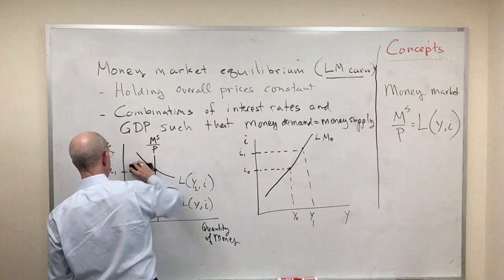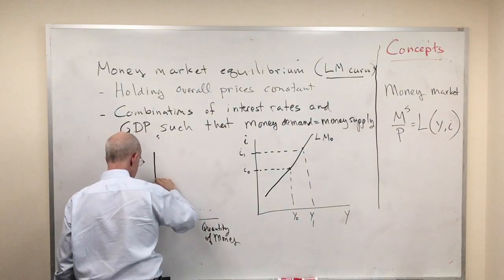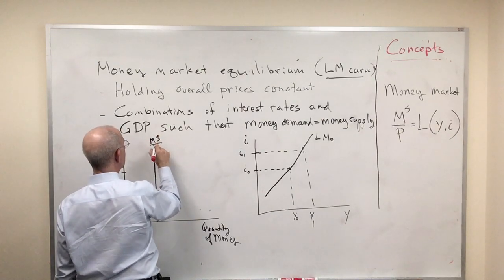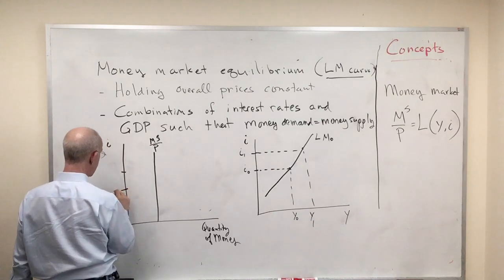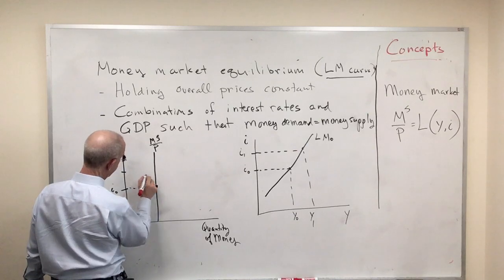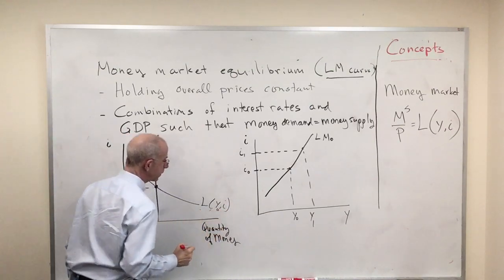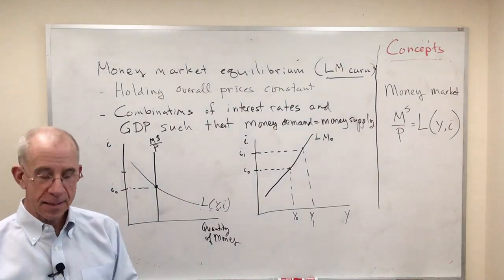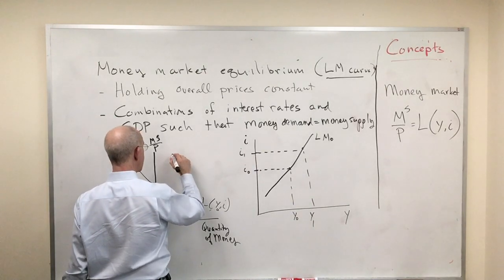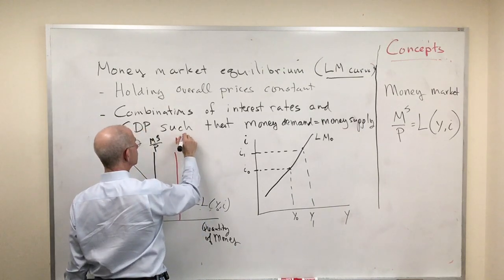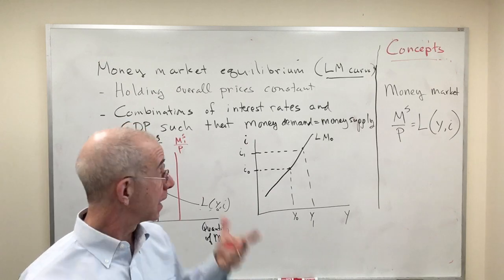One of the most important things that we'll do in using the LM curve is to think about what will happen if there's a change in the money supply. For the initial level of national income, we've got this equilibrium. Now let's imagine the central bank conducts some sort of monetary operation to increase the nominal stock of money, holding prices fixed.